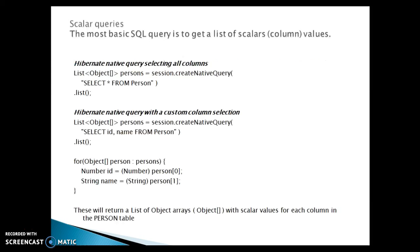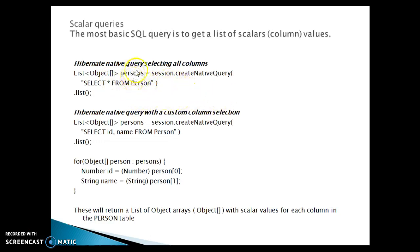Scalar queries are used when you are not selecting all columns in a row — you're interested in only a few columns. For selecting all columns with a Hibernate native query, you write a plain SQL query like SELECT * FROM person, pass it to createNativeQuery, and call the list method. This returns an array of objects, which you then iterate to retrieve column values explicitly.